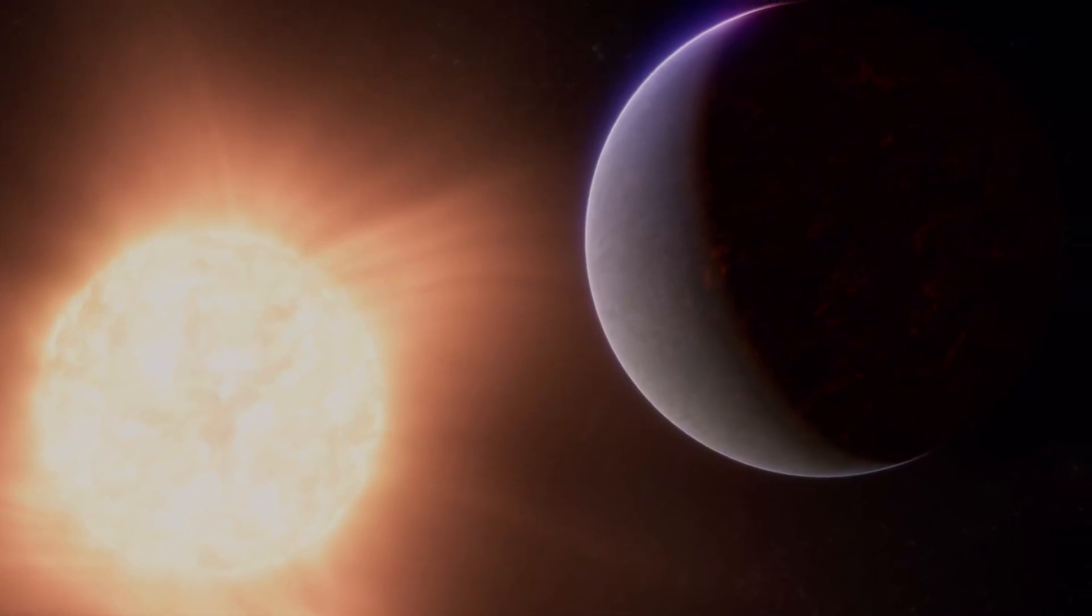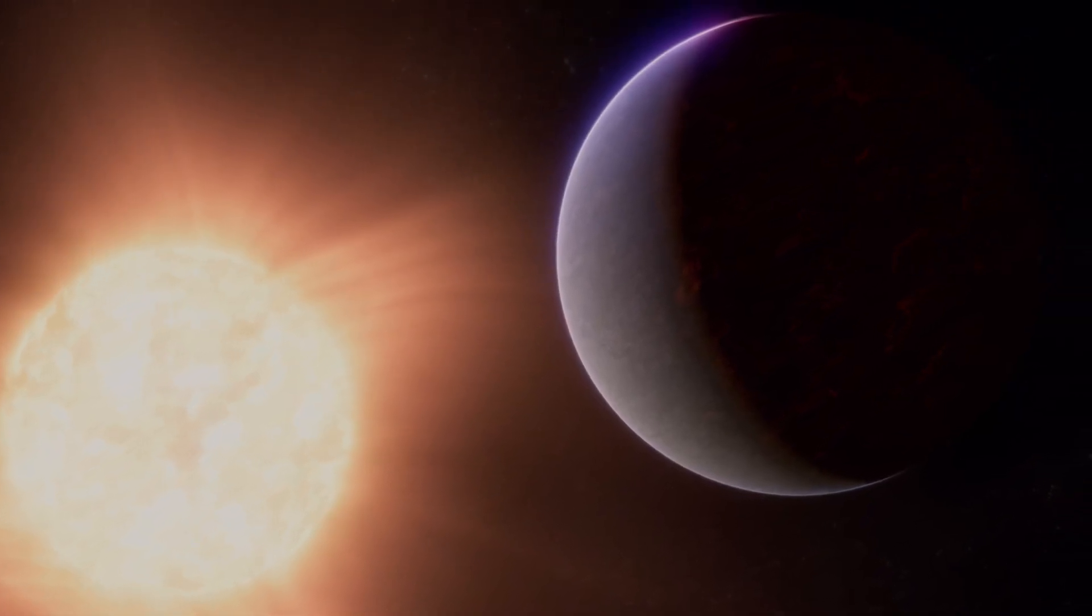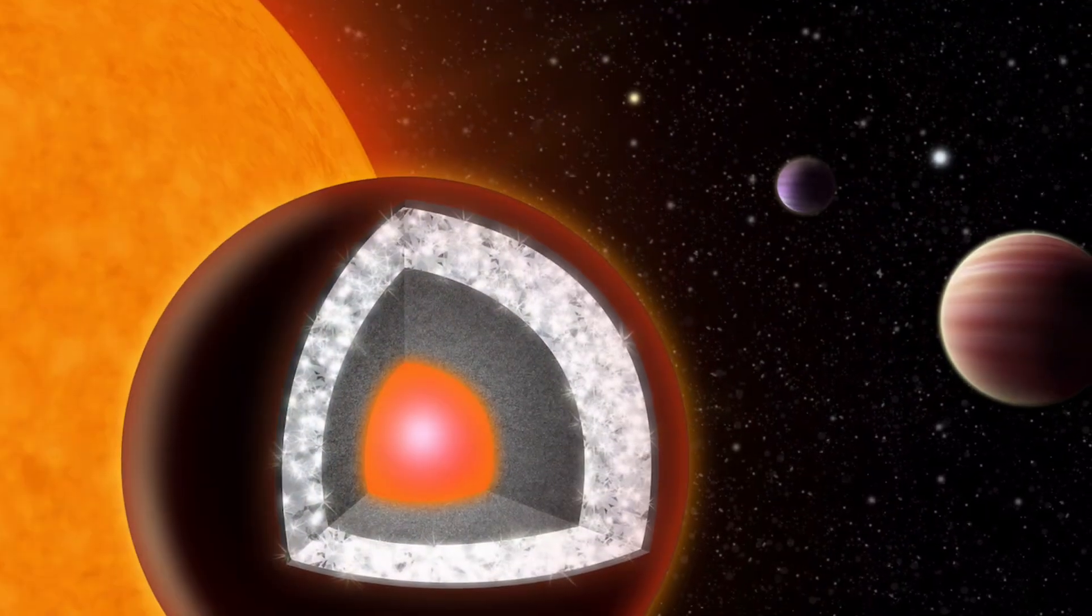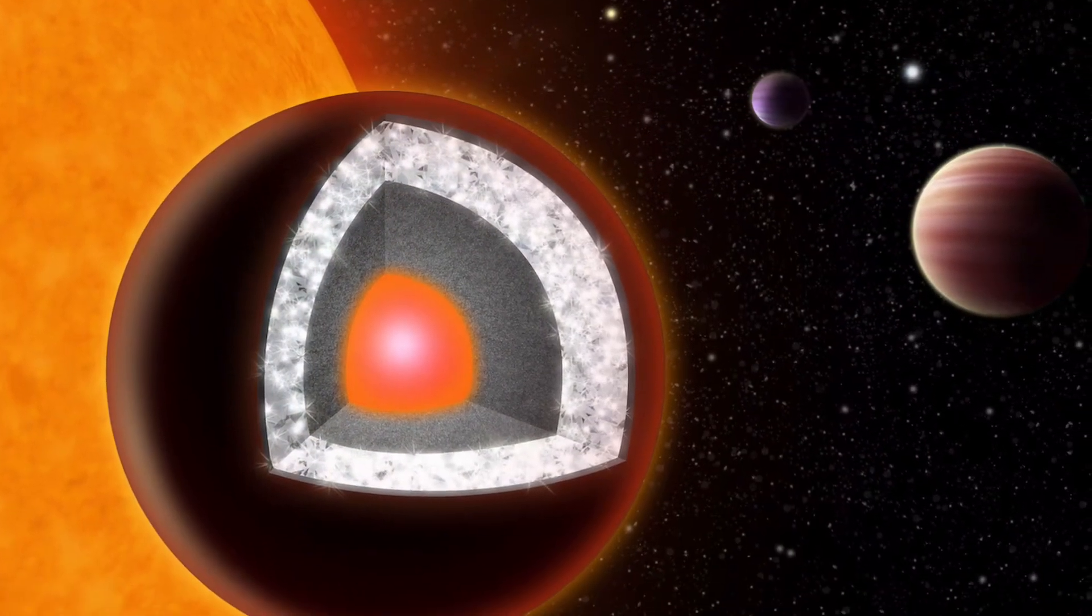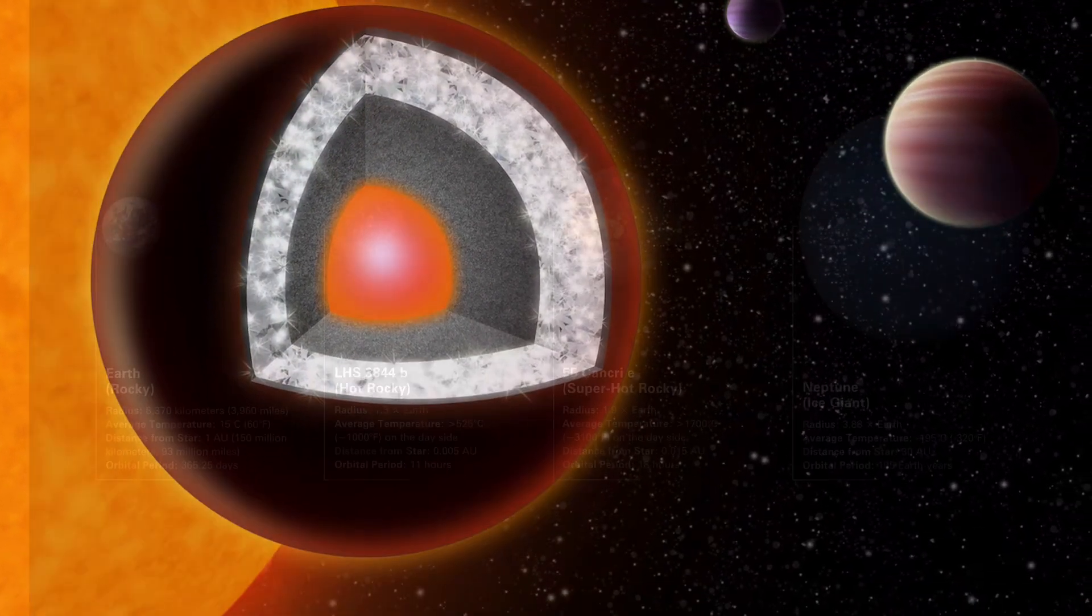55 Cancri e, an exoplanet located approximately 40 light-years away in the constellation Cancer, has captivated astronomers and the public alike with its intriguing characteristics.